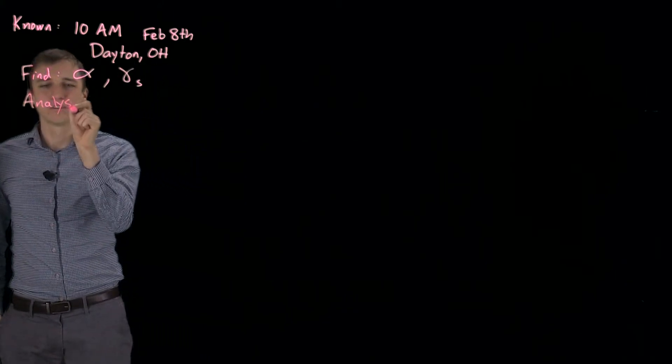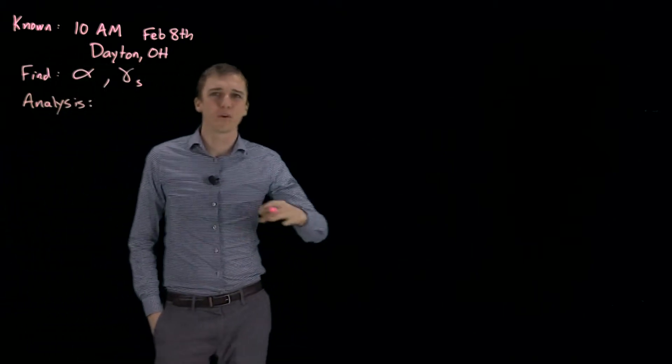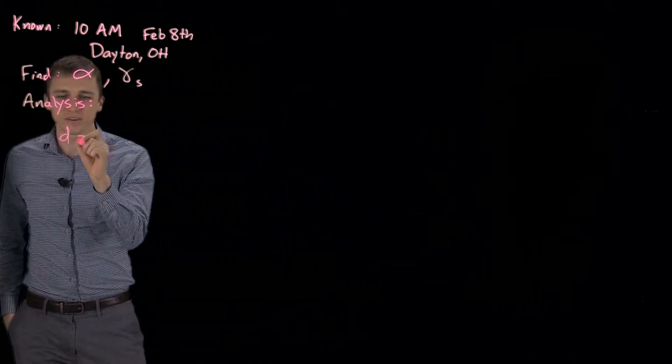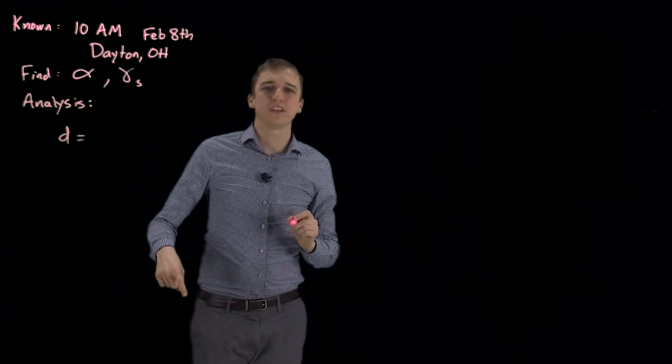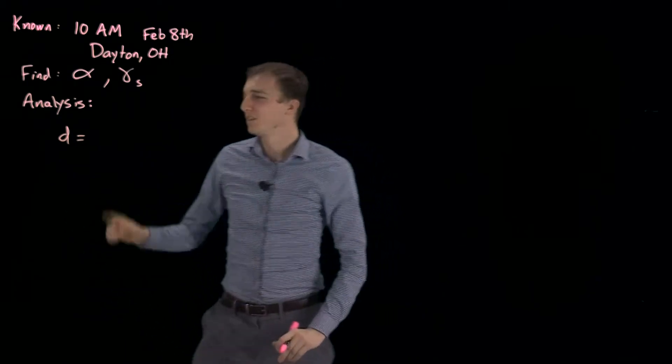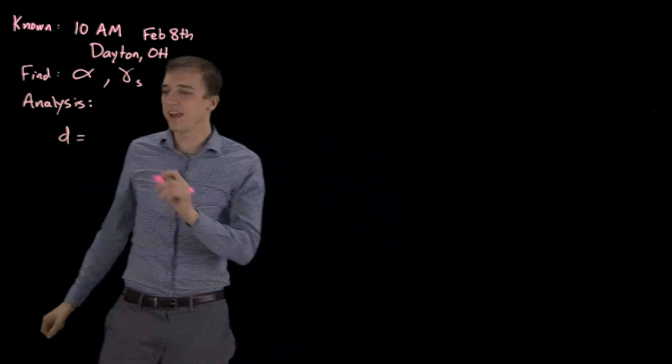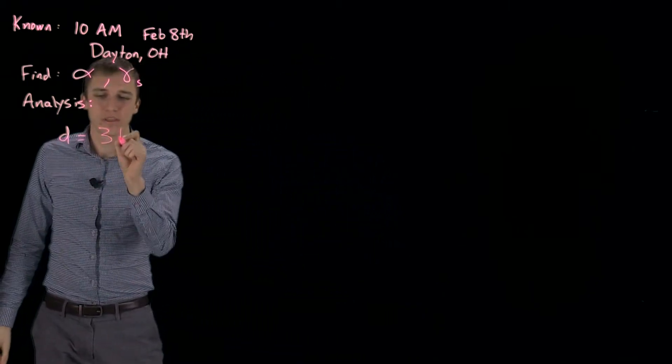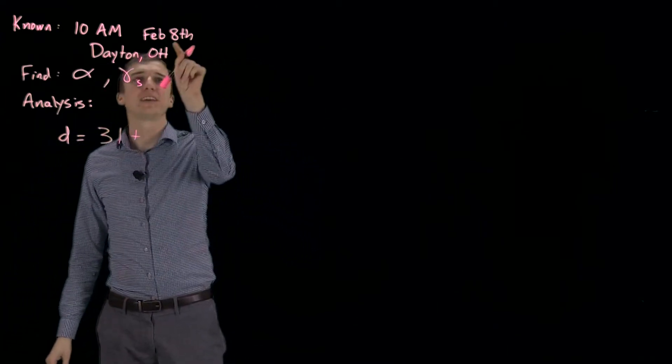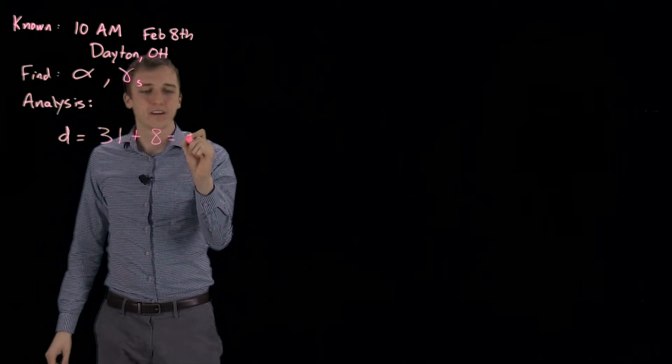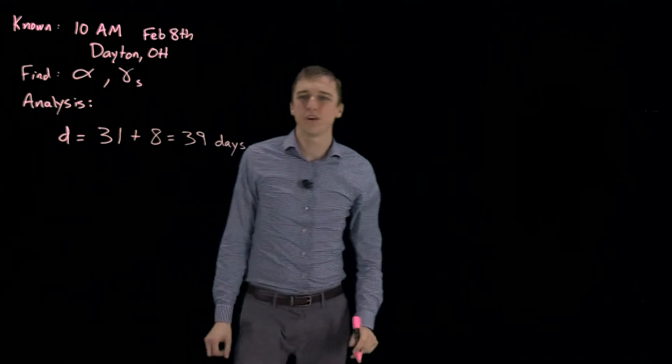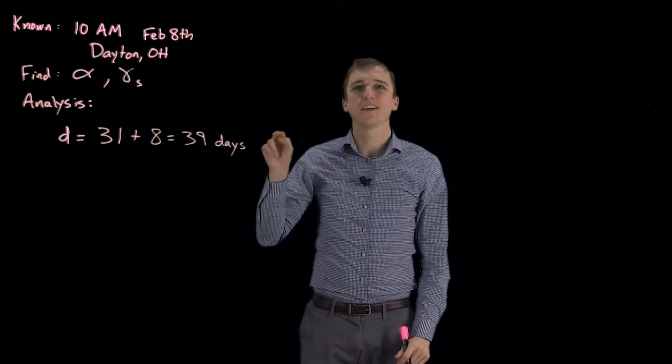Okay, so there is a pretty standard formula we use following some steps. The first thing we do is we find D, which is the day of the year relative to January 1st. So since this is February 8th, we do 31 days in the month of January plus 8 days in the month of February, which gives us 39 days. So this is the 39th day of the year.